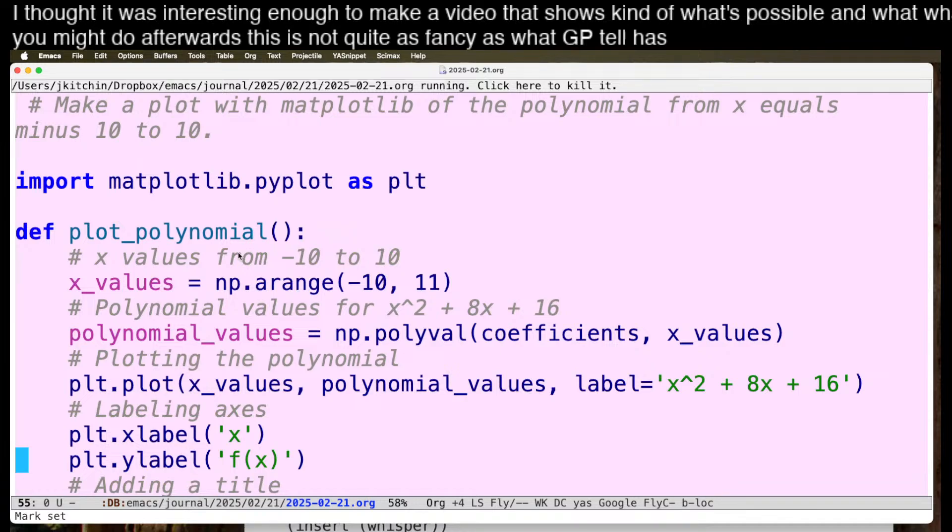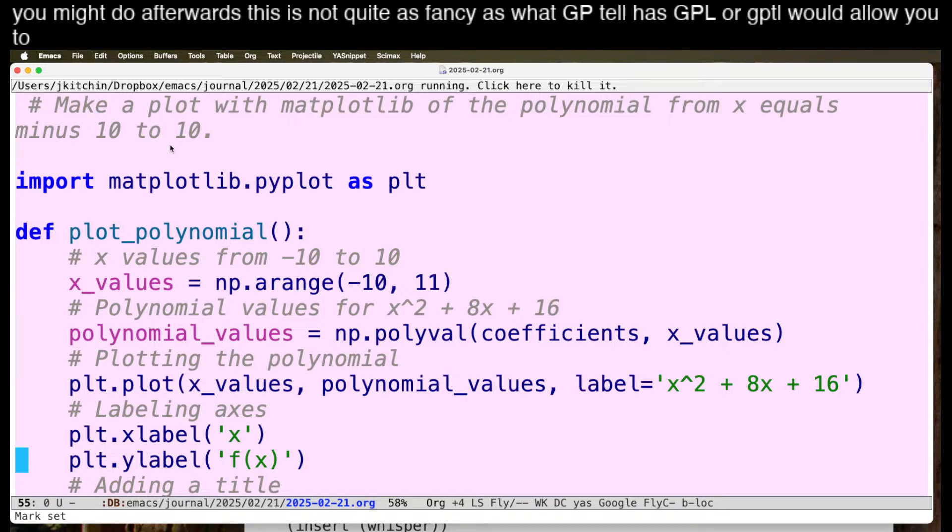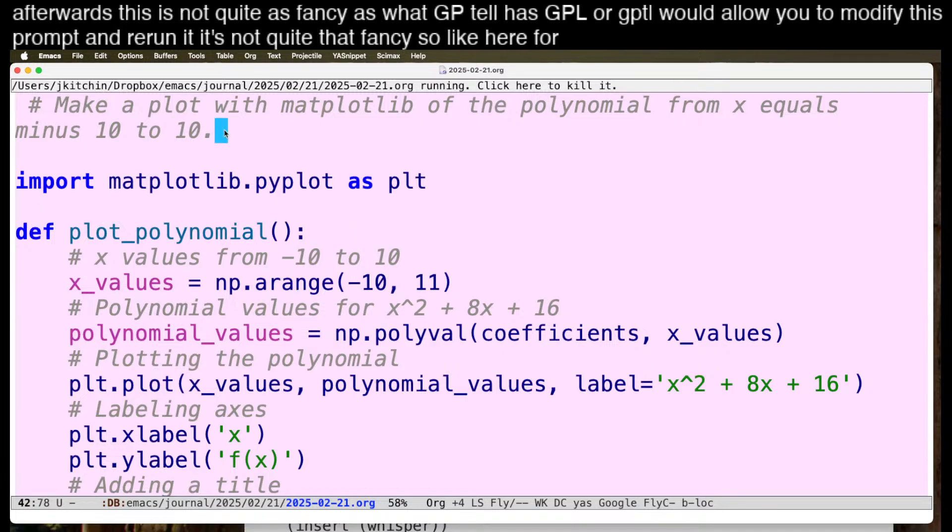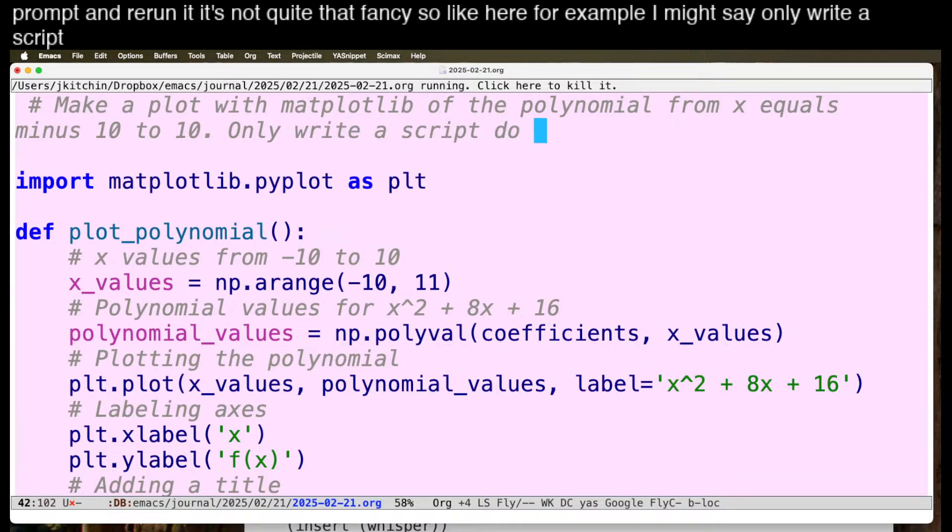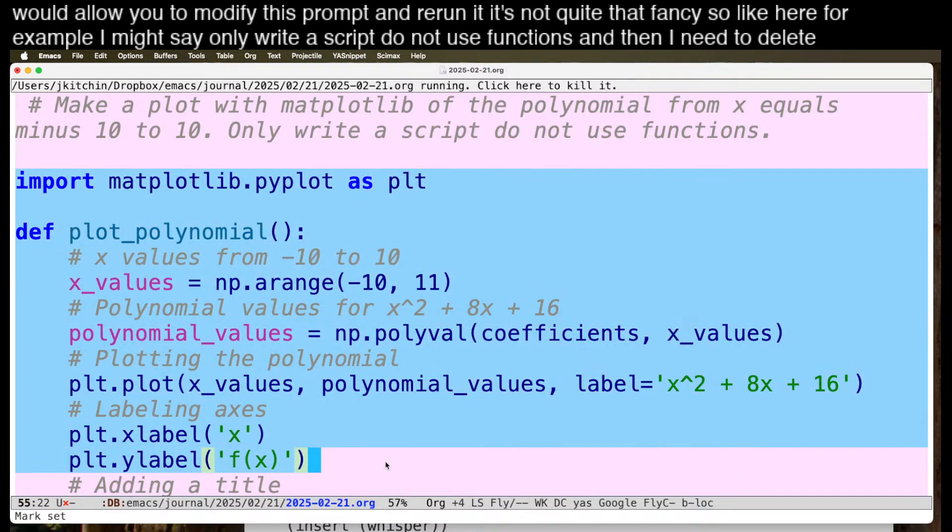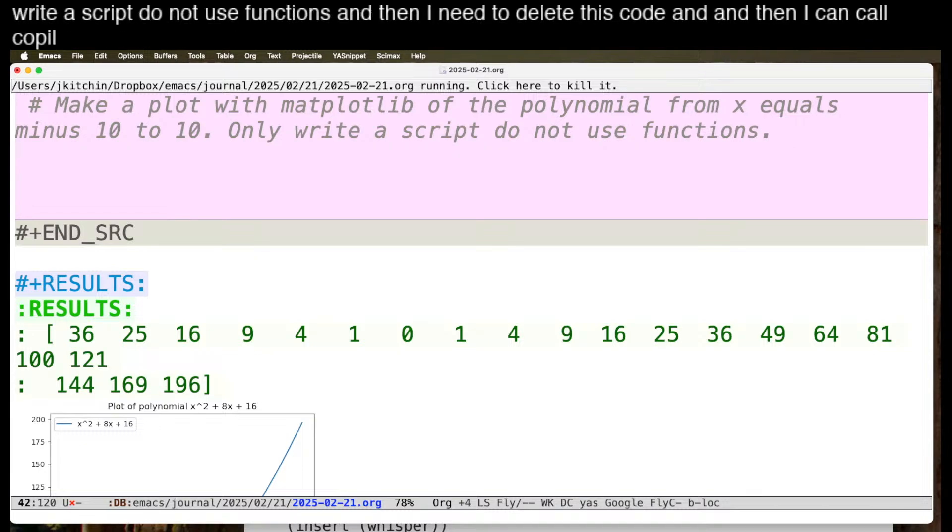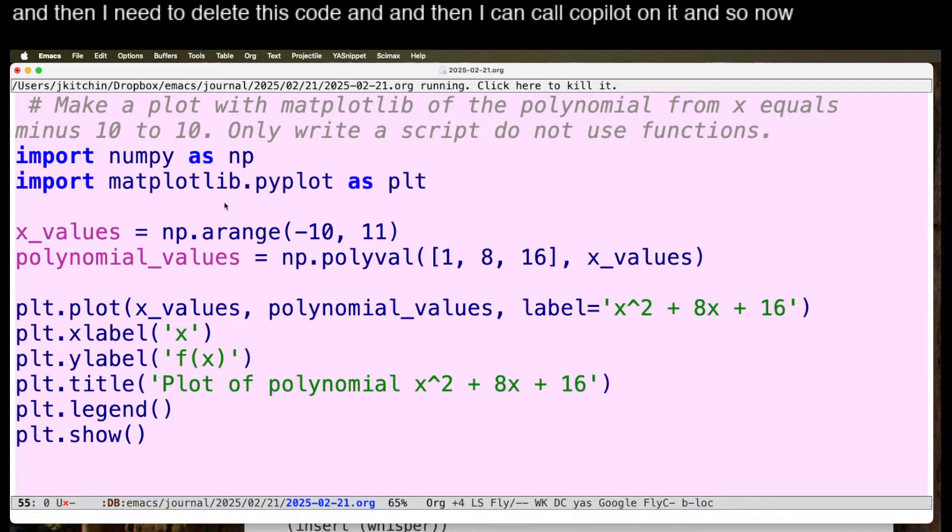GPTEL would allow you to modify this prompt and rerun it, and it's not quite that fancy. So like here, for example, I might say only write a script, do not use functions. And then I need to delete this code, and then I can call copilot on it.